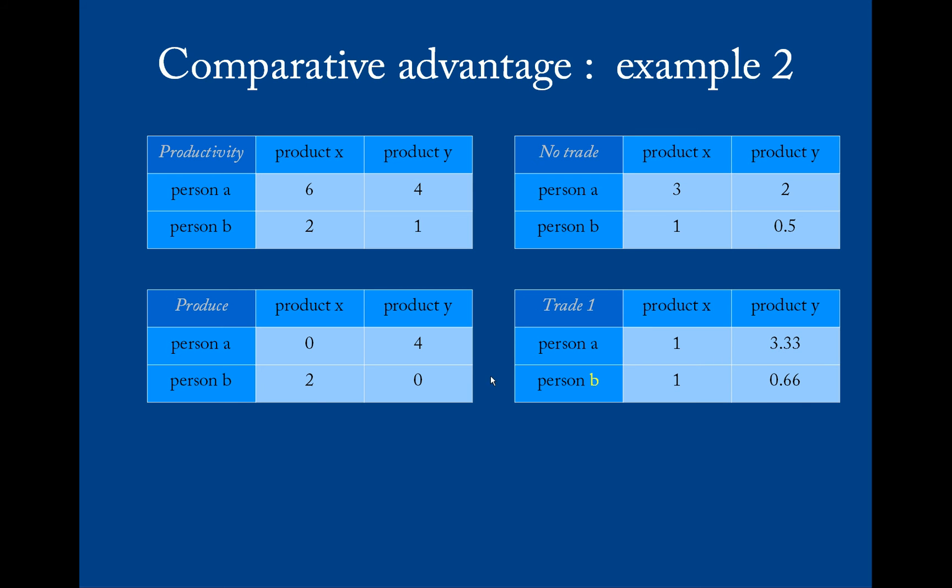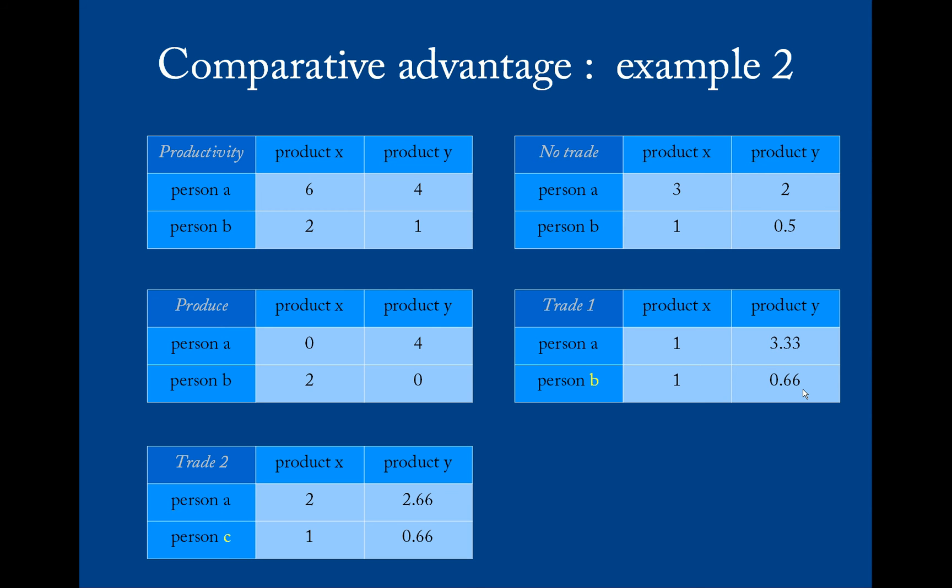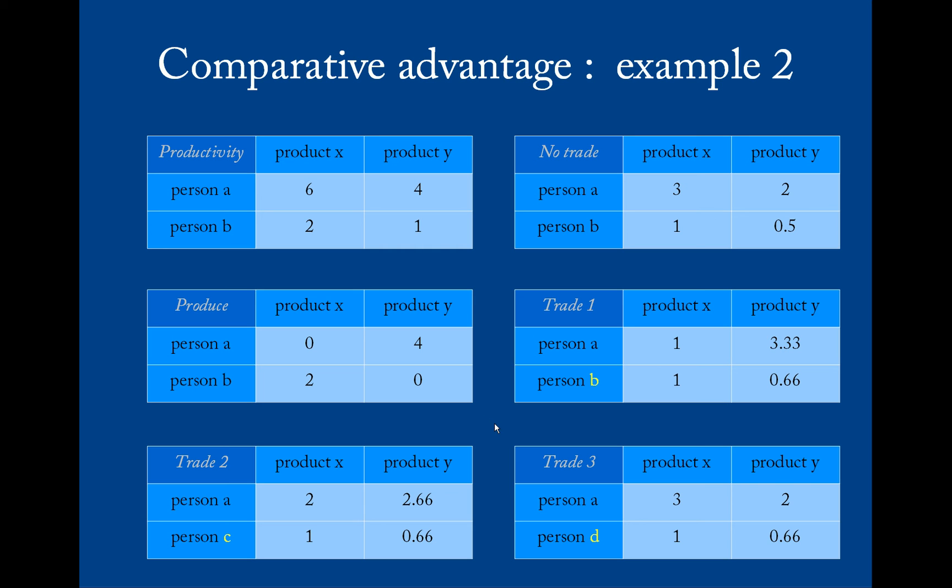Then we engage in a trade. For example, for every X that person A gets, he gives up two-thirds of Y. So he gets one after one trade and he loses two-thirds of his four, which leaves him with three and one-third. Person B has one X remaining as he's gained two-thirds of Y. Again we engage with the same trade with a third person. Now person A has two X and he only has two and two-thirds of Y left. Person C is the same as person B. And a third trade with a fourth person - now person A has three X and two Y remaining.